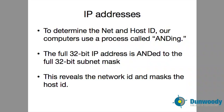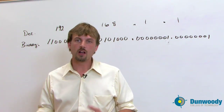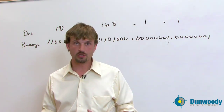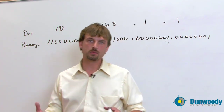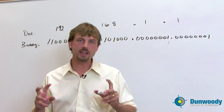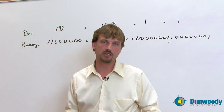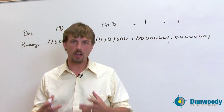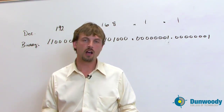To determine the host ID and the network ID, our computers use a process called anding. It's a Boolean math idea, and it relates to all the binary concepts where we only have 1s and 0s. It's not the same as normal arithmetic like 2 plus 2 equals 4 — we've got some different rules. I'm going to take you through what the anding process looks like. It's built from an AND gate logic circuit.